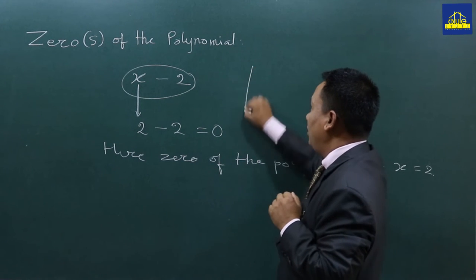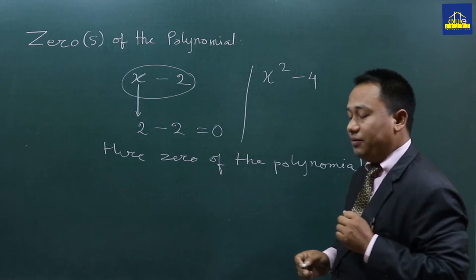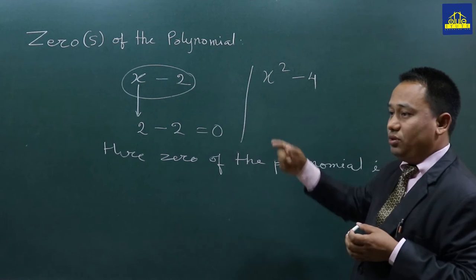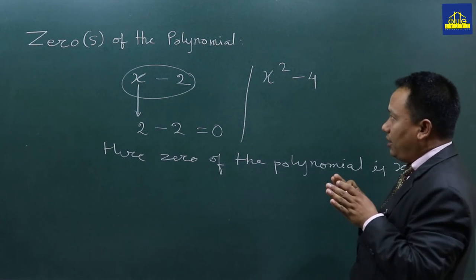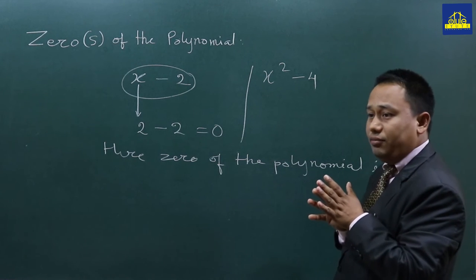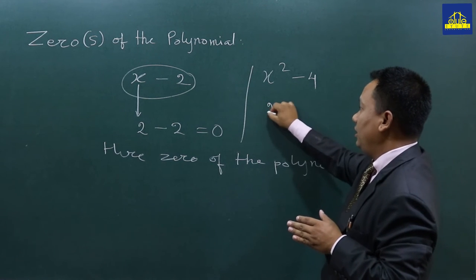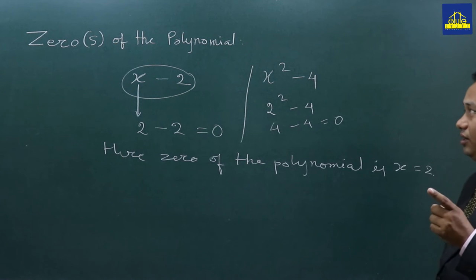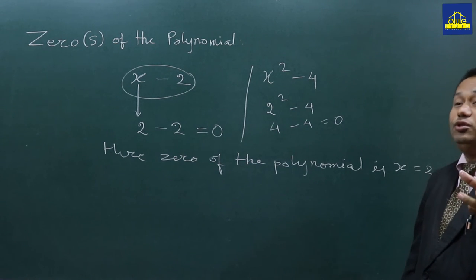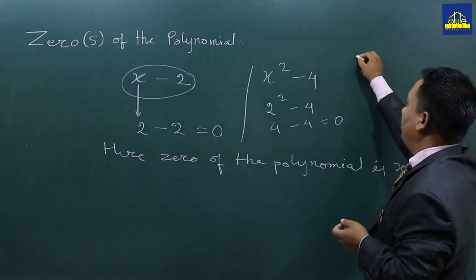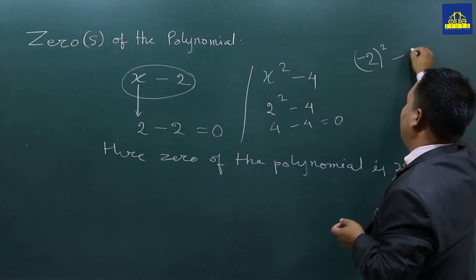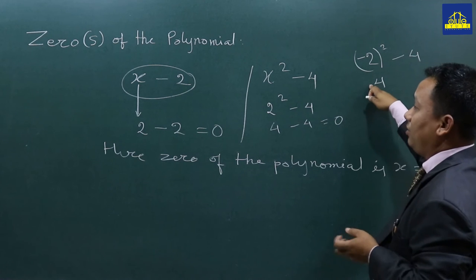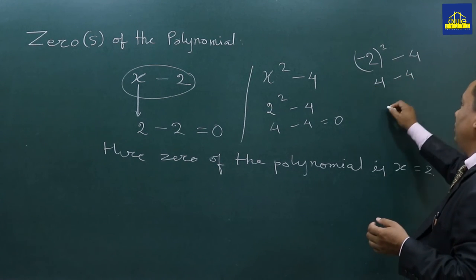We also have a polynomial equal to the square of the polynomial. If we have two squares, if we have another value — if you have minus two, you can see minus two. If you have minus two, you have to get positive four. So minus two squared is equal to positive four, and minus four is zero.